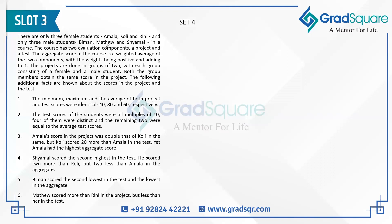Let's have a look at the fourth set. There are only three female students: A, K, and R. We have three male students: B, M, and S. The course has two evaluation components — a project and a test. Each student must be evaluated on both. The aggregate score is the weighted average of the two components, with weights being positive and adding up to one.